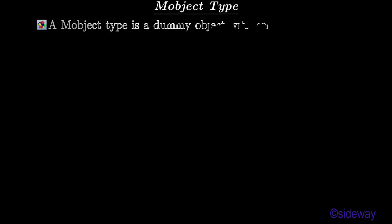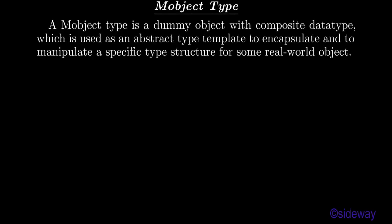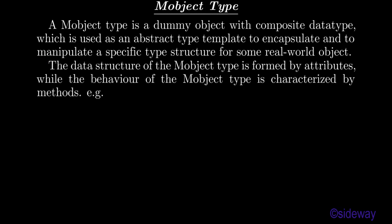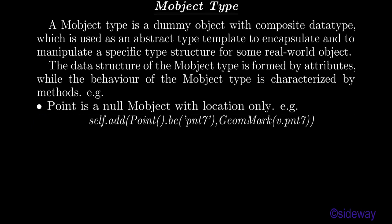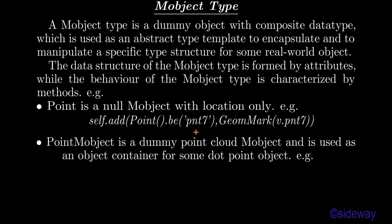An object type is a dummy object with composite data type, used as an abstract type template to encapsulate and manipulate a specific type structure for some real-world object. The data structure of the object type is formed by attributes, while the behavior is characterized by methods. For example, Point is a null object with location only. PointMobject is a dummy point cloud Mobject used as an object container for some dot-point objects.